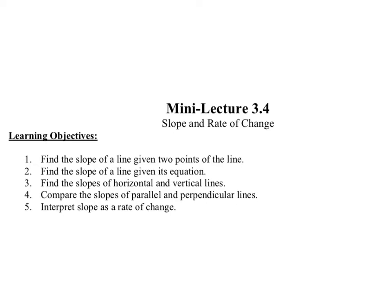In Chapter 3, Section 4, we are looking at slope and rate of change. Our objectives are to find the slope of a line given two points, find the slope of a line given its equation, find the slopes of horizontal and vertical lines, compare the slopes of parallel and perpendicular lines, and interpret slope as a rate of change.